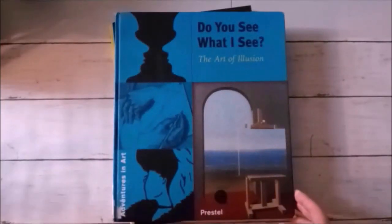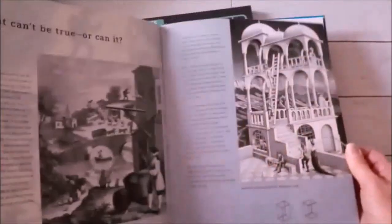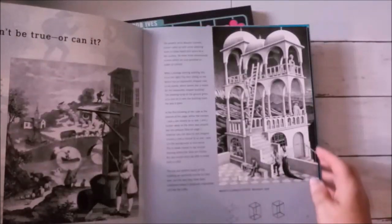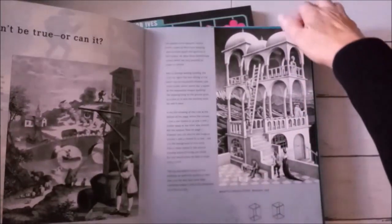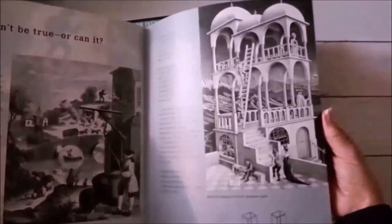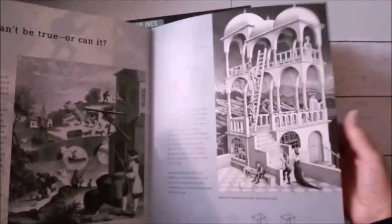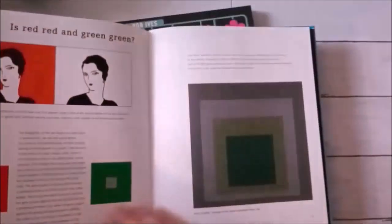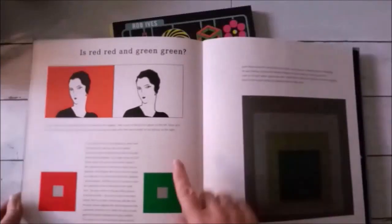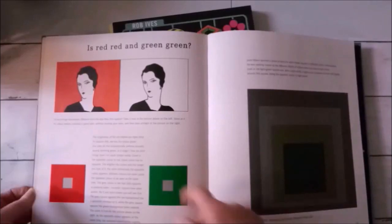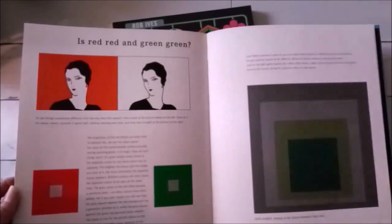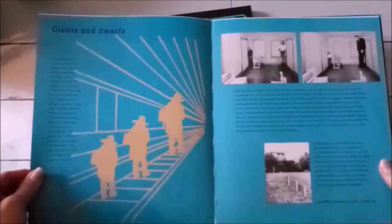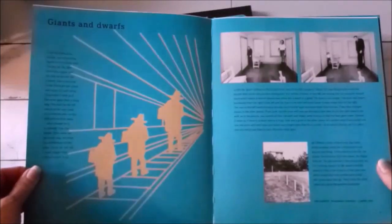We also have this one called Do You See What I See? The Art of Illusion by Presto. This one is filled with a lot of fun little things. Maybe you've seen some of them. That sure is one of my favorites that I could just look at all day. I never get tired of it. There's hidden pictures. And this one is similar to the one I just showed you. It talks about complementary colors and how it can play tricks on the eyes. There's some information about perspective.